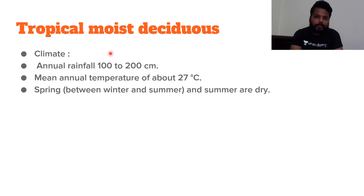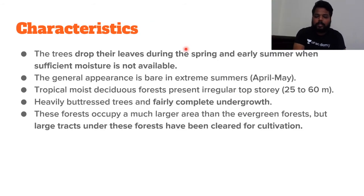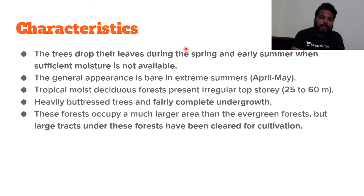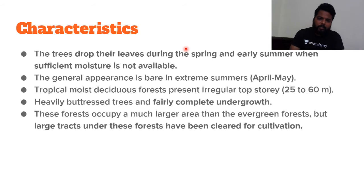Next is tropical moist deciduous forestry, found in regions with rainfall of 100 to 200 cm. Annual temperature is around 27°C. Spring and early summer are dry seasons. Wherever you see the word 'deciduous,' remember: deciduous forests shade their leaves in dry seasons in order to overcome drought conditions in the near future.